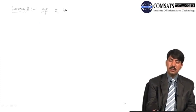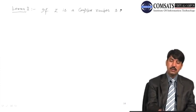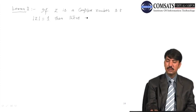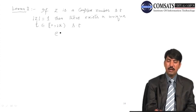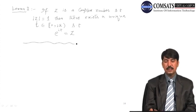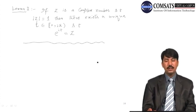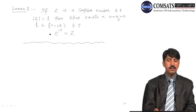Lemma 2: If z is a complex number such that |z| = 1, then there exists a unique t in [0, 2π) such that e^(it) = z. This second result tells us that for every complex number with modulus one, there exists a unique t such that e^(it) = z.